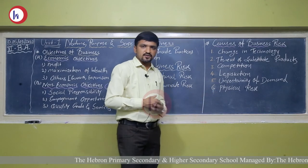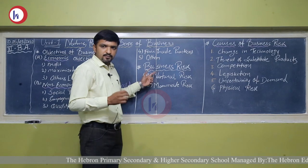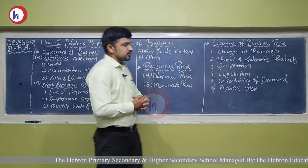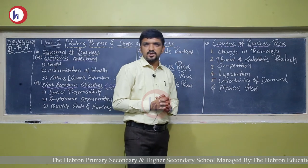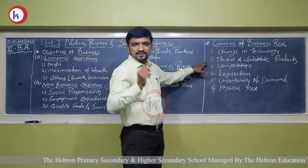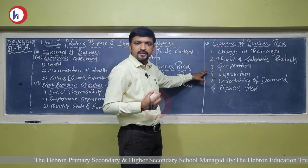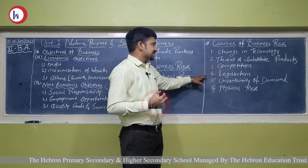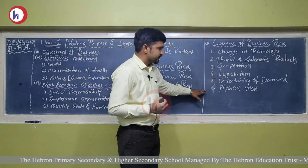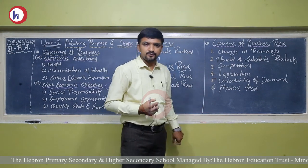To revise: business risk can be of two types — natural risk and manmade risk. Causes of business risk are: change in technology, threat of substitute products, competition, legislation, uncertainty of demand, and physical risk. Thank you.